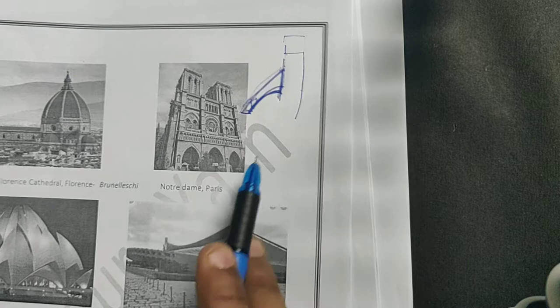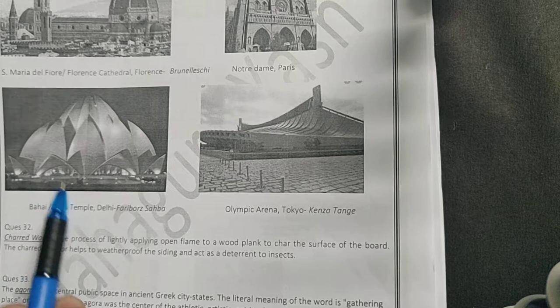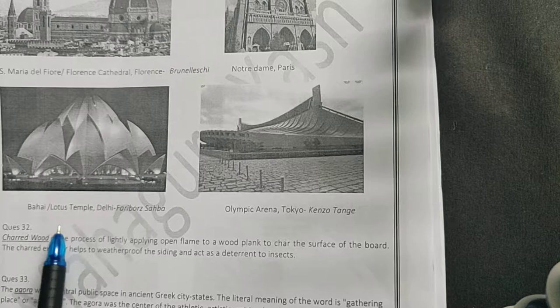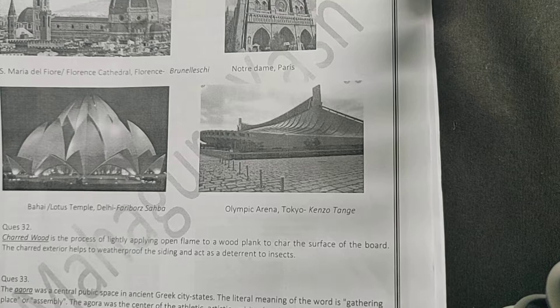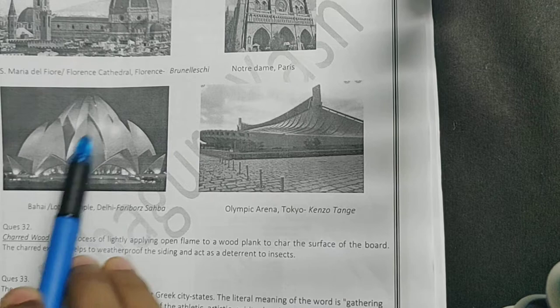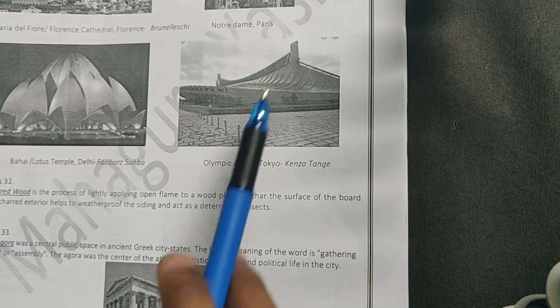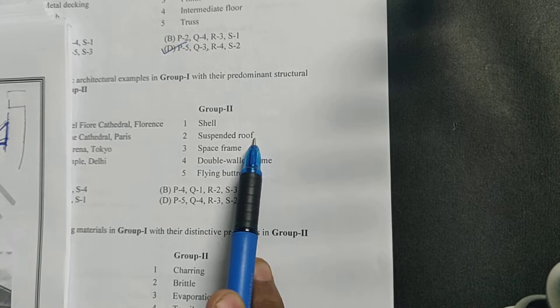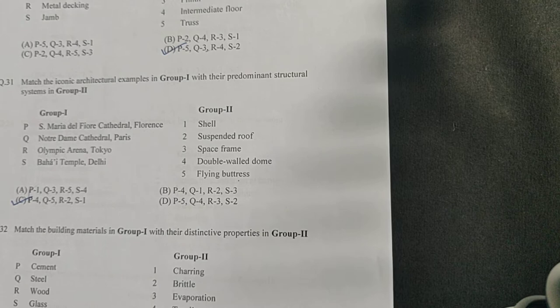Next is Bahai Temple. Bahai Temple is none other than the Lotus Temple by Fariborz Sahba, and we can easily see that it is a shell structure. One important thing to notice: in a very earlier question, I guess 2003 or 2004, the question was how many petals does this lotus temple have, and the answer is nine. Next is Olympic Arena in Tokyo by Kenzo Tange. You can see this is a suspended roof.